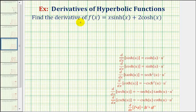We want to find the derivative of f(x) = x times hyperbolic sine of x plus two times hyperbolic cosine x. Notice how this first term is a product of two functions, so we'll have to apply the product rule in order to find the derivative of this term.